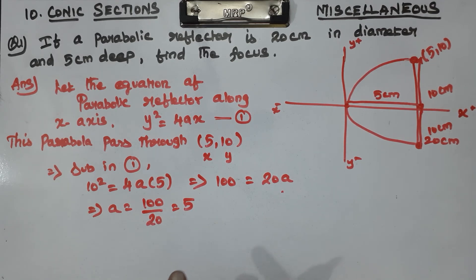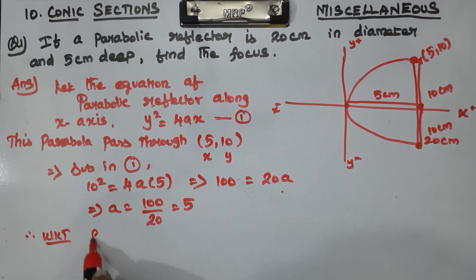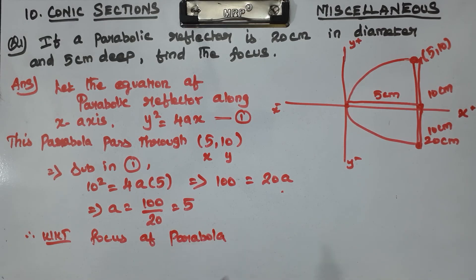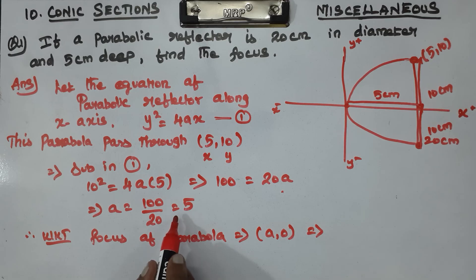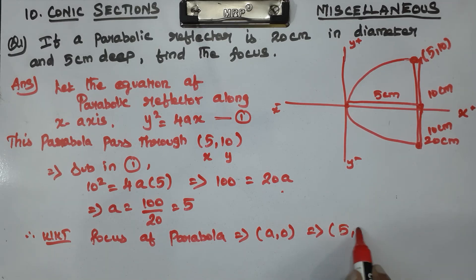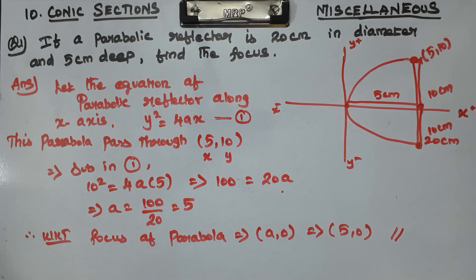The Focus of the Parabola is at (a, 0). Therefore, since a = 5, the Focus is at (5, 0). This is the answer for Question Number 1 of the Miscellaneous Exercise. It's very easy — look at the diagram.